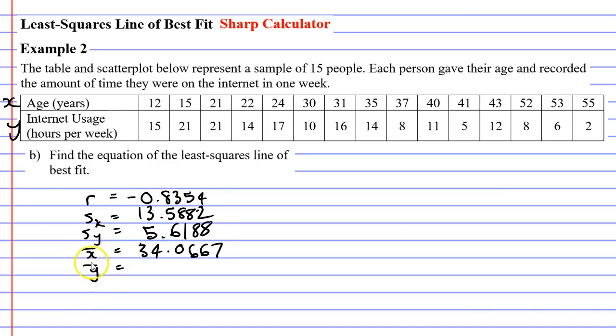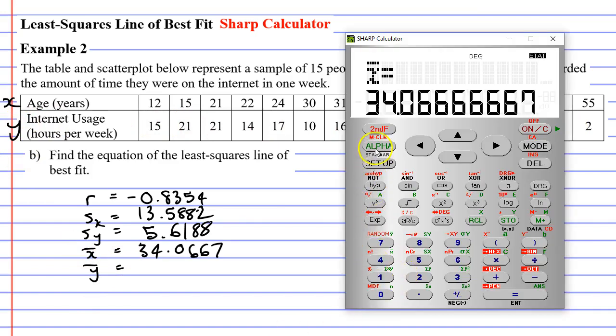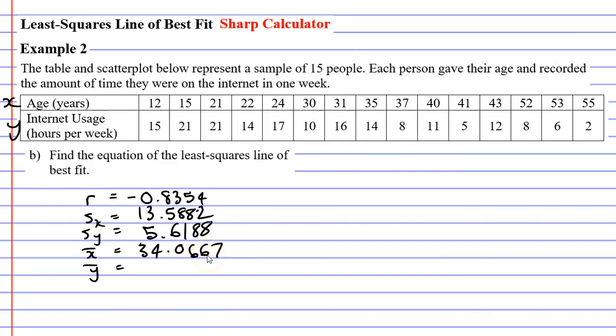And now we need to find the mean of x, or x-bar. That just means the mean or the average of the top row. It's on our calculator again. Here's x with a bar above it, alpha 4. We get 34.0667. And finally, y with a bar above it, which is the mean or average of the y row. That's going to be alpha 7, y with a bar above it. And we get 12, which is good. We don't have to do it to any number of decimal places.